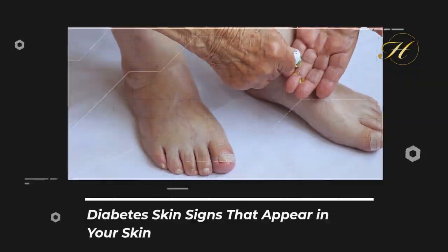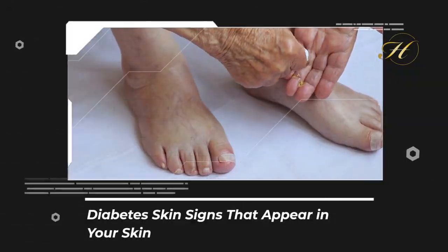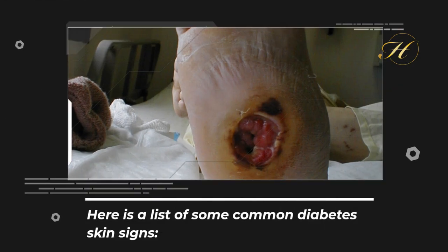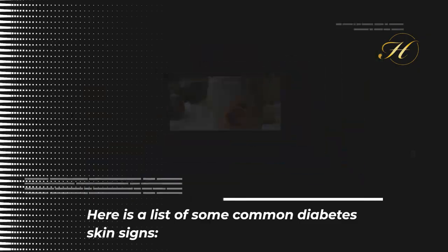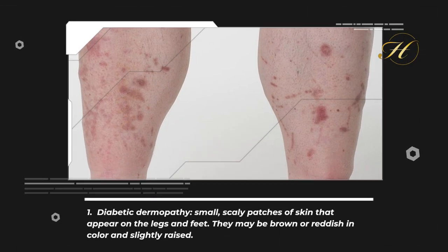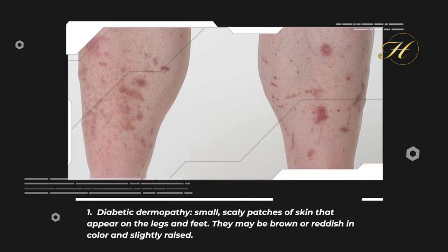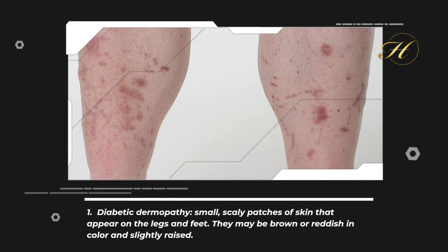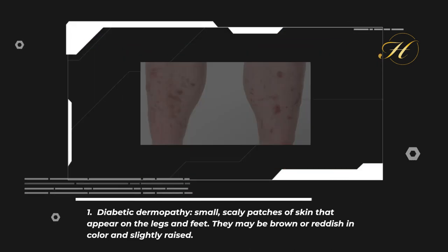Diabetes Skin Signs That Appear in Your Skin. Here is a list of some common diabetes skin signs. 1. Diabetic Dermopathy: Small, scaly patches of skin that appear on the legs and feet. They may be brown or reddish in color and slightly raised.